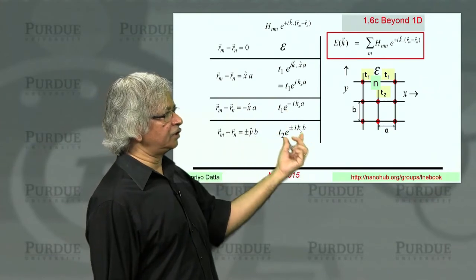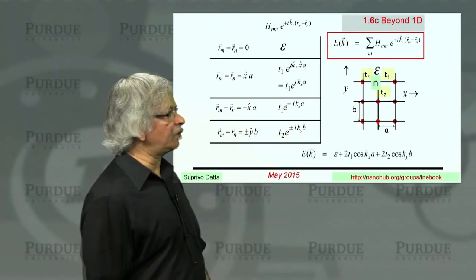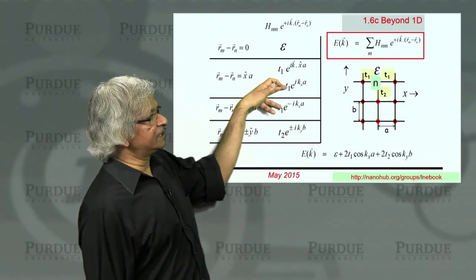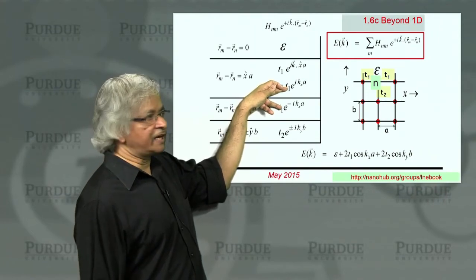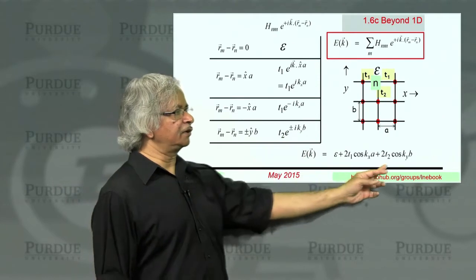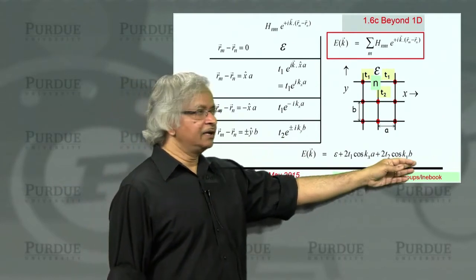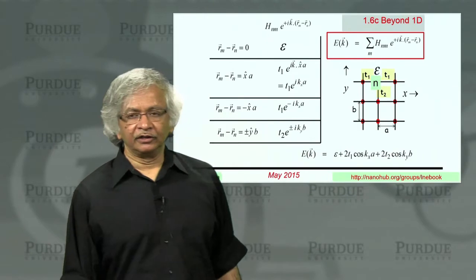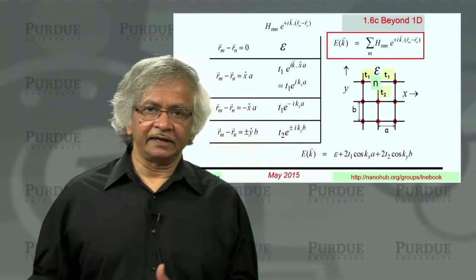And so it's plus minus b in the y direction. And the corresponding factor here would be t2 e to the power plus minus i, but now it would be y component of k times b. So those are the five terms. One, two, three, and then two of them, five. So if you add them all up, of course, this and this would add up to give you twice the cosine kxa. And this, if you add up the two terms, you'll get twice the cosine kyb. So that's the dispersion relation for this two-dimensional lattice.